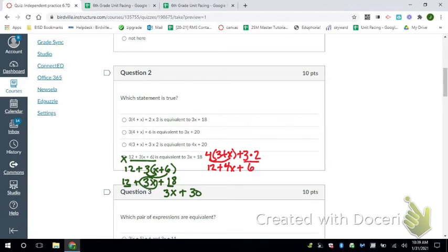Those are separate here. So I'm going to have 4x plus, and then I have 12 plus 6, and that is 18. 4x plus 18. That's not true.